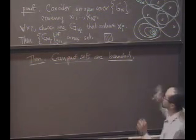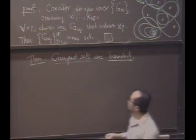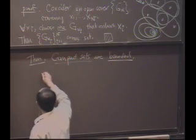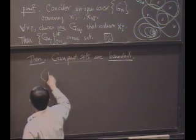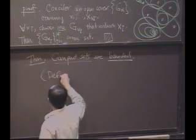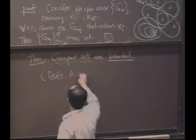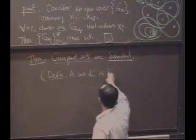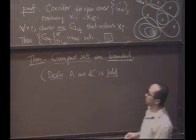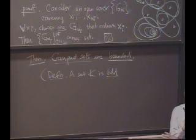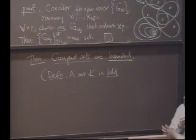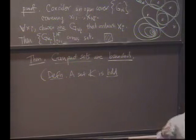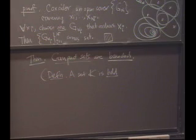So remember, we're in some metric space. So let me just make a definition. Definition, a set K is bounded, I'm going to abbreviate bounded by BDD. A set K is bounded if, suggest a definition for me, for an arbitrary metric space. What do you think it means to be bounded?